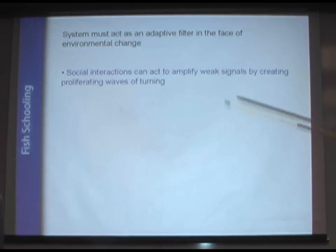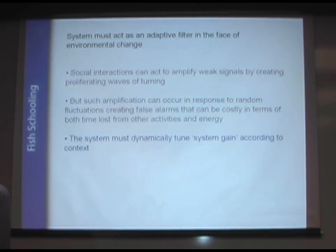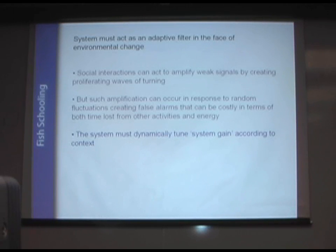The social interactions act to amplify these weak signals, creating these proliferating waves. However, there's a trade-off. If you're amplifying all of these terms, then you're also going to amplify fluctuations, random fluctuations, creating false alarms. And this could be very costly indeed. So the system itself must dynamically tune the system gain according to context.